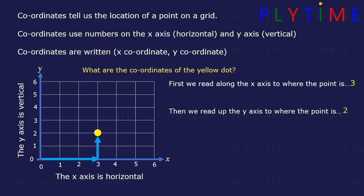So we'd write the coordinates as: open the brackets, 3 for the x, comma, 2 for the y, and close the brackets.